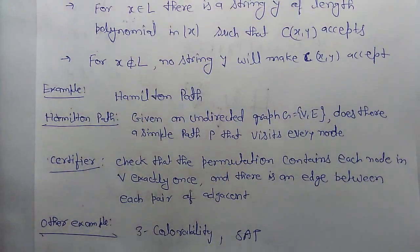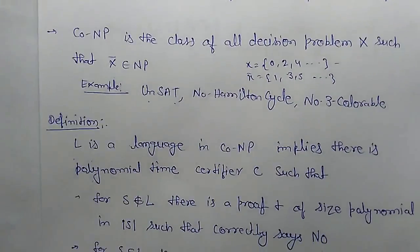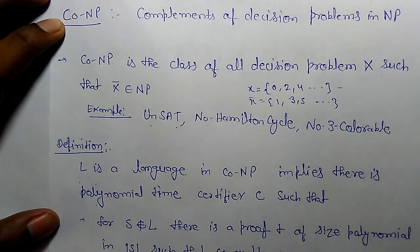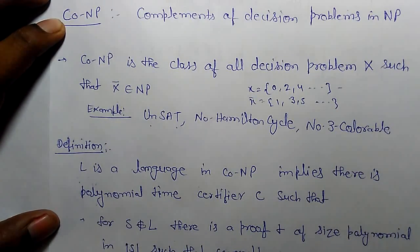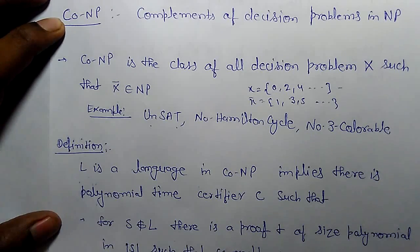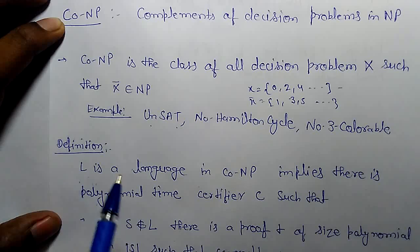So what about Co-NP? Co-NP is the complement of decision problems in NP. In the NP class, NP consists of all decision problems where 'yes' can be verified. Now we are going to check for complements of NP class. Co-NP is the class of all decision problems x such that x-complement belongs to NP.